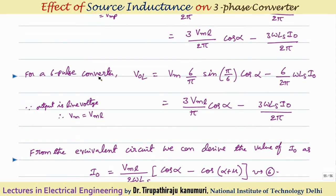For the 6-pulse converter, substituting P=6: VOL = Vmax × (6/π) × sin(π/6) × cos α − (6/2π) × ωLs × I₀. Since sin(π/6) = 1/2, this gives (3/π) × Vmax. For the 6-pulse converter the output voltage is a line voltage, so Vmax = VmL. Therefore: VOL = (3VmL/π) × cos α − 3ωLs × I₀/2π. This matches the result derived previously. For the 12-pulse converter, line-to-line voltage is used similarly.